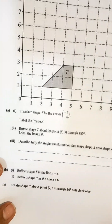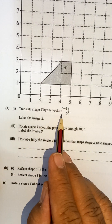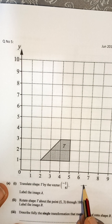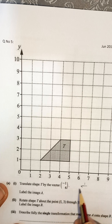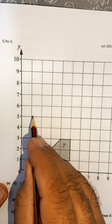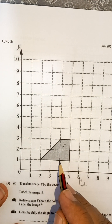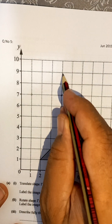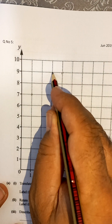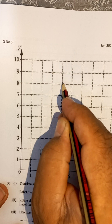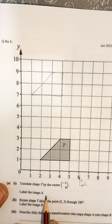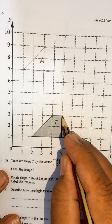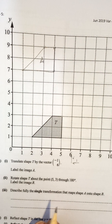Now the last question. First: translation by (-1, 6). Negative 1 means one box left, 6 positive means six boxes up. Count one left, then one, two, three, four, five, six up — do this for each point. Label it as A. Now rotate: center (5, 3), 180 degrees, label as B. I'm using the tracing paper. Center is the point (5, 3). This point goes 90 degrees, then another 90 — that gives 180 degrees.